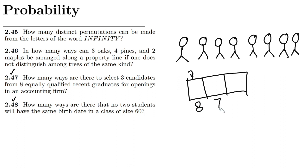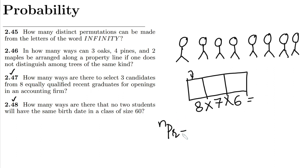Here I will have seven choices because one slot has been occupied, and here I will have six. So multiplying them together I will get the answer. Similarly, that could also be done by using the nPr formula, where n is equal to eight and r is equal to three.